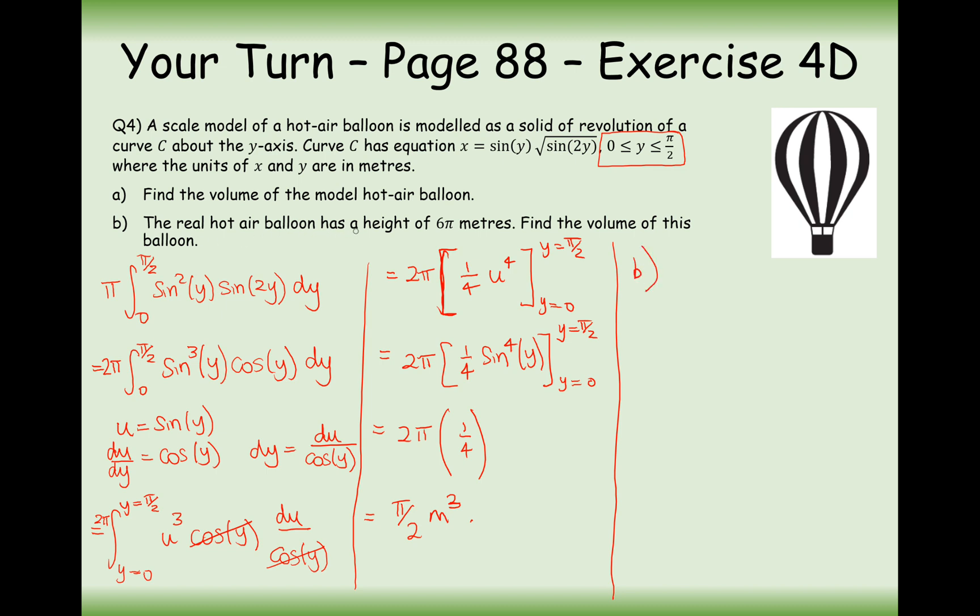Let's now move on to part B. The real hot air balloon has a height of 6 meters. Find the volume of this balloon. When it says y equals from 0 to π/2, what this is referring to is at one point it will be a height of 0 because remember y is equal to the height of the coordinate. The y-dimension is the height. And up here will be π/2. That's the value for y. But in real life, this height is going to be 6π. What's the scale factor from our model to the actual height? The scale factor enlargement is going to be a factor of 12 because this is π/2, this is 6π. The scale factor, same as the last question actually, is going to be 12.